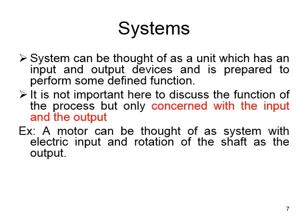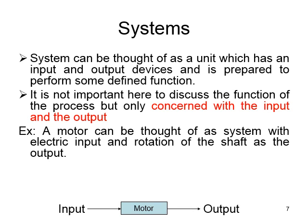For example, a motor can be thought of as a system with electrical input and rotation of the shaft as the output. So a motor is a system where the input is an electrical input and the output is the rotation of the shaft, as depicted here.